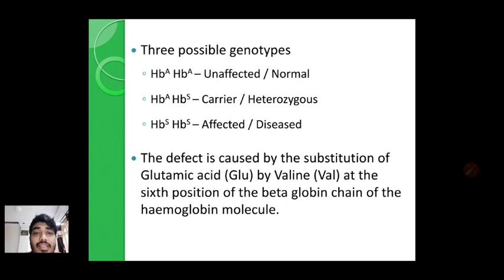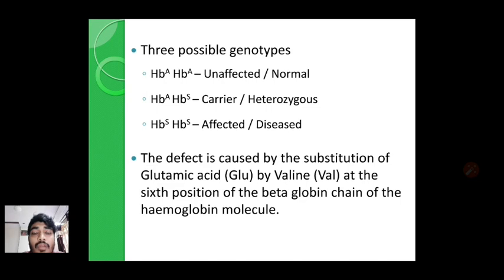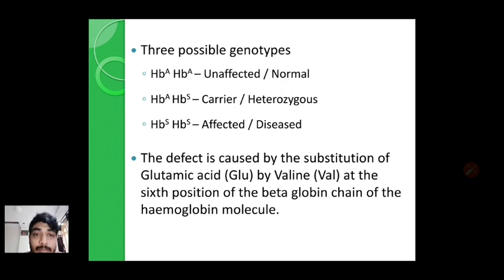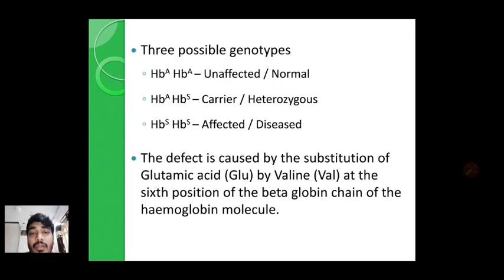Now, how is sickle cell anemia caused? When we consider the normal allele, hemoglobin is mainly made up of two alpha chains and two beta chains. The gene which codes for beta globin — in the normal gene — has glutamic acid at the sixth amino acid position. But because of a point mutation, this glutamic acid is replaced by the amino acid valine, and because of that the hemoglobin becomes defected.